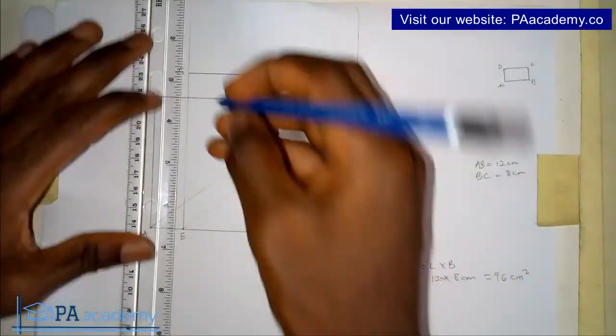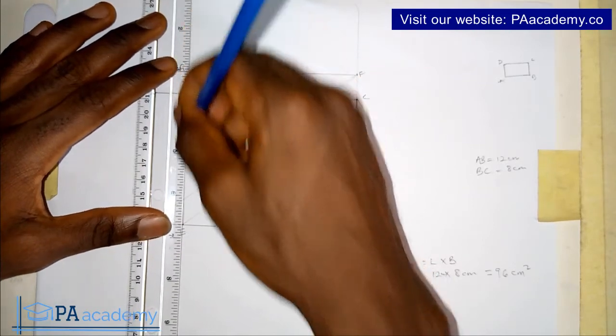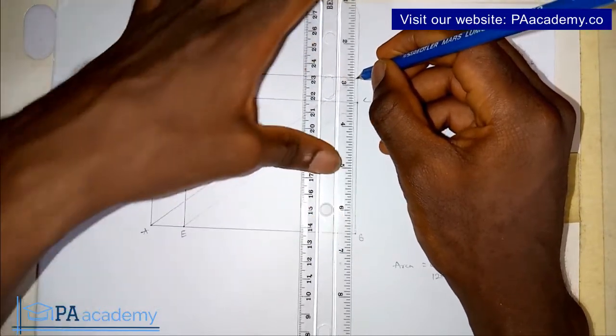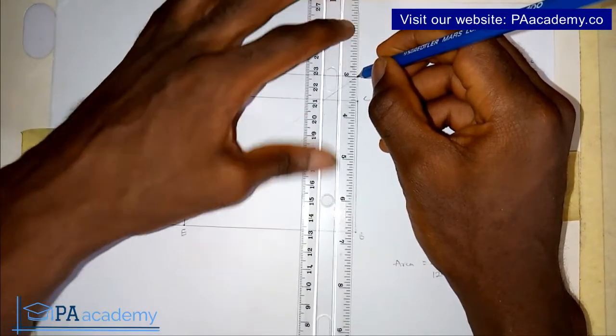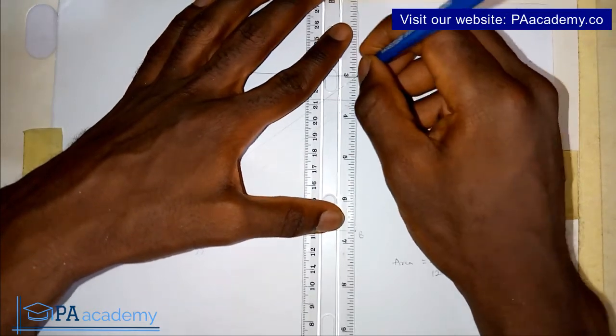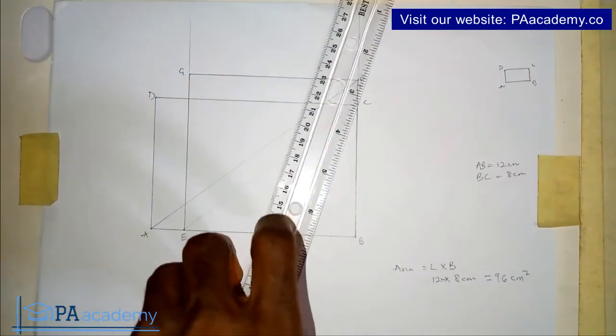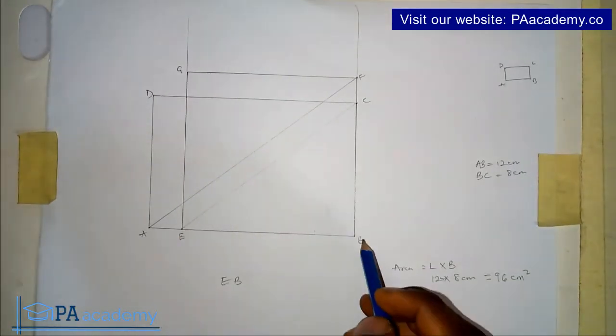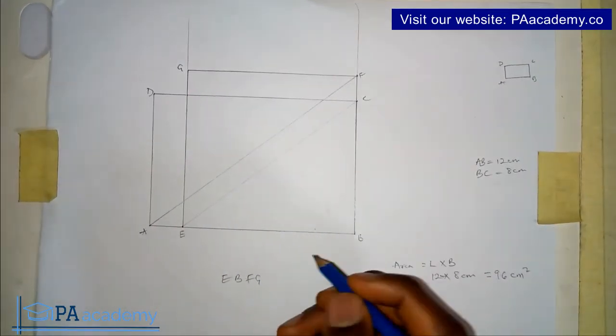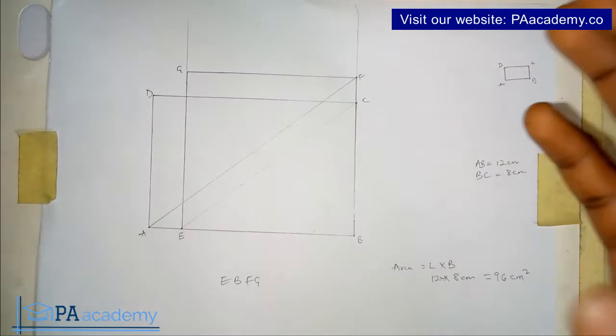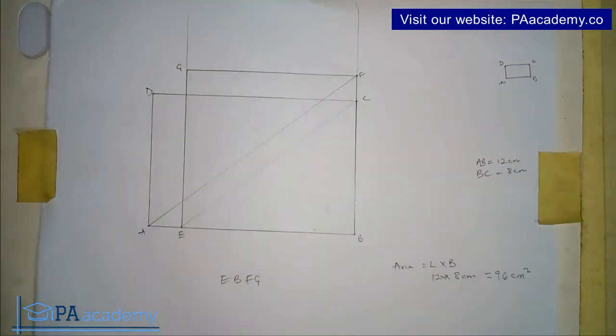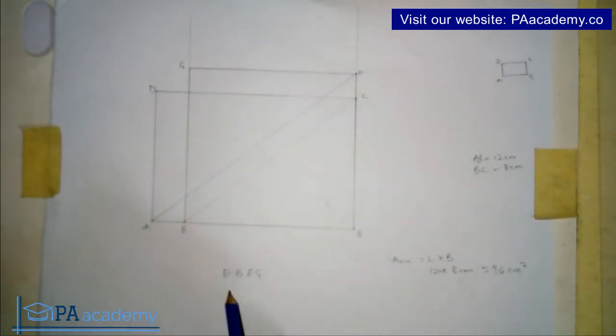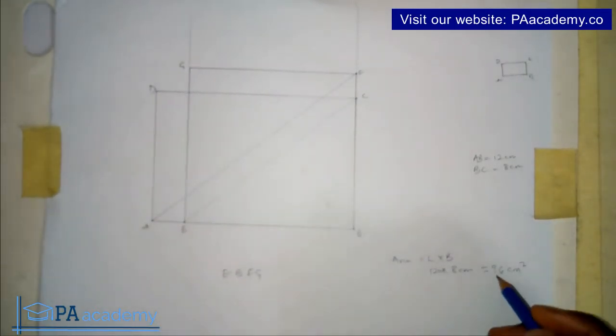Now we already have the new rectangle. So the new rectangle that we are having now, it is E, B, that is E, B, F, G. E, B, F, G. So now let's confirm if the area of this triangle, I mean rectangle, sorry if I'm saying triangle. We are dealing with rectangle, not triangle. So now let's confirm if the area of this rectangle that we've just drawn, E, B, F, G, will give us 96 cm². So we already know that E, B, the length of E, B is 10 cm.